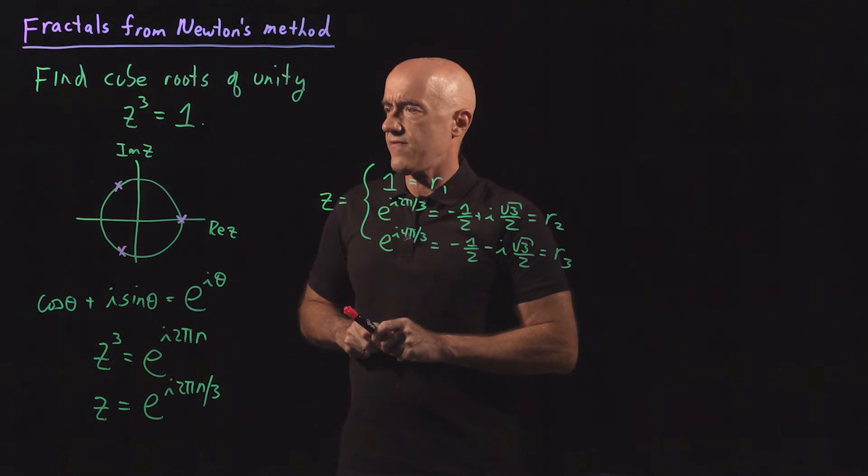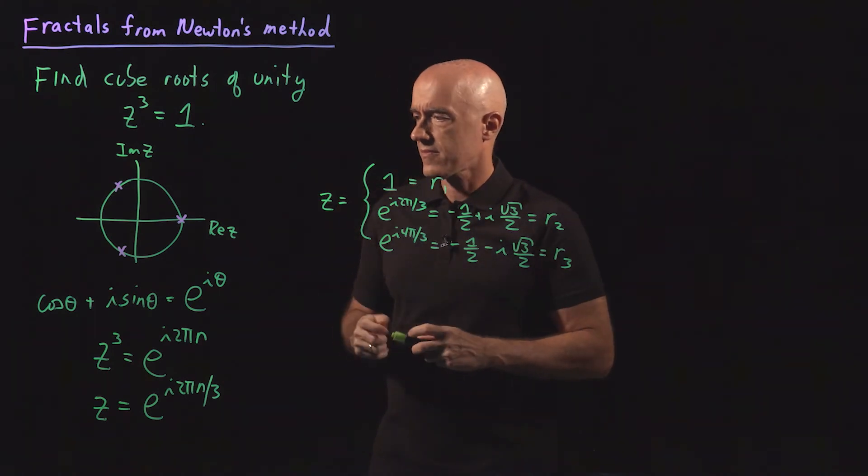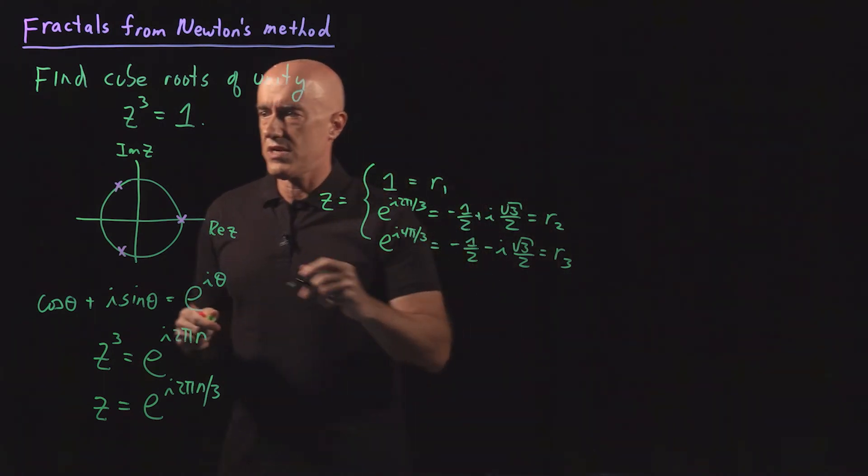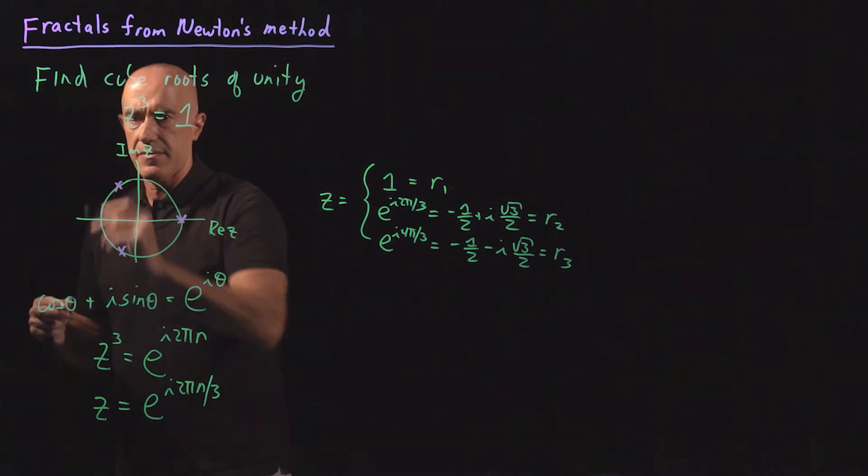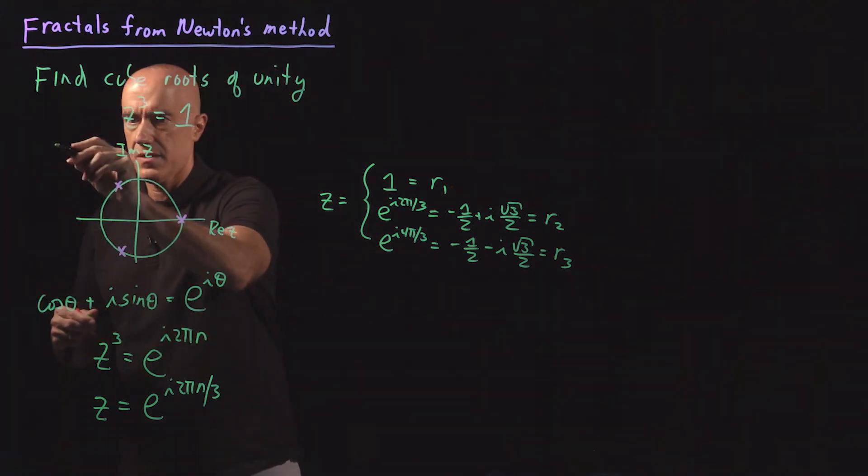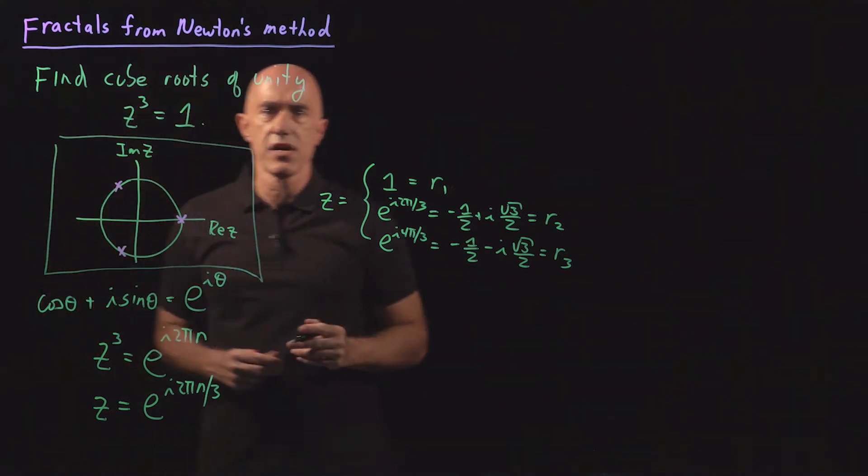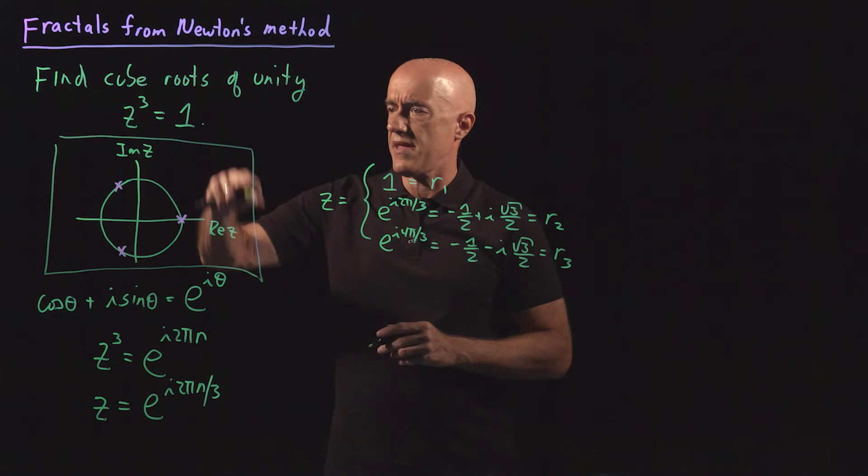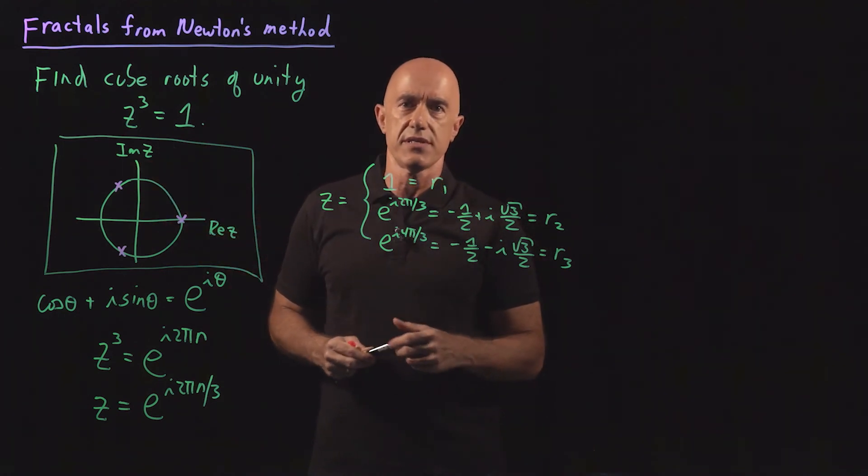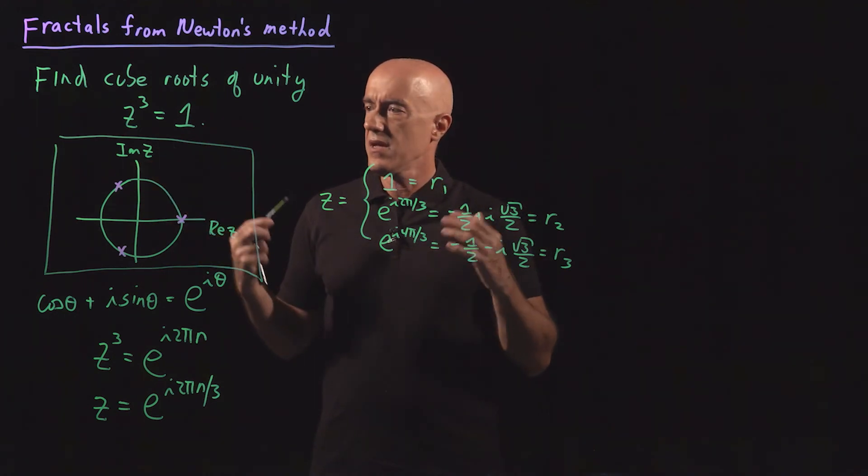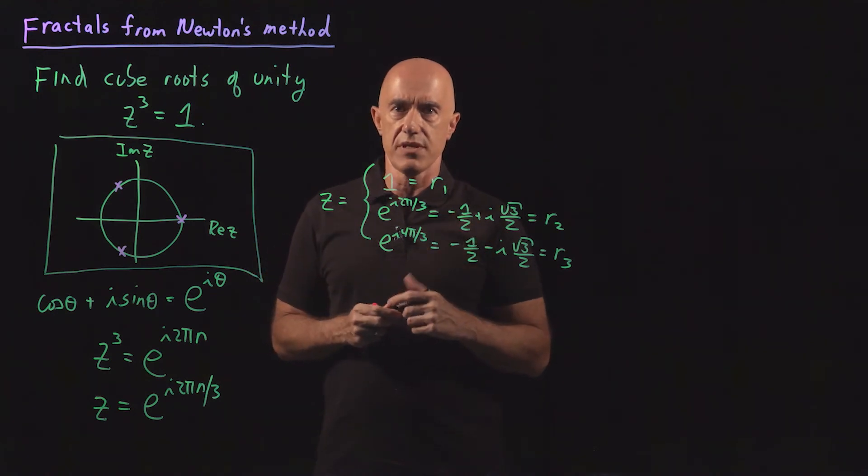So how do we get a fractal from this? Well, what we do is we look at the complex plane here and consider the convergence of Newton's method to initial conditions in the complex plane. So let's write down Newton's method.